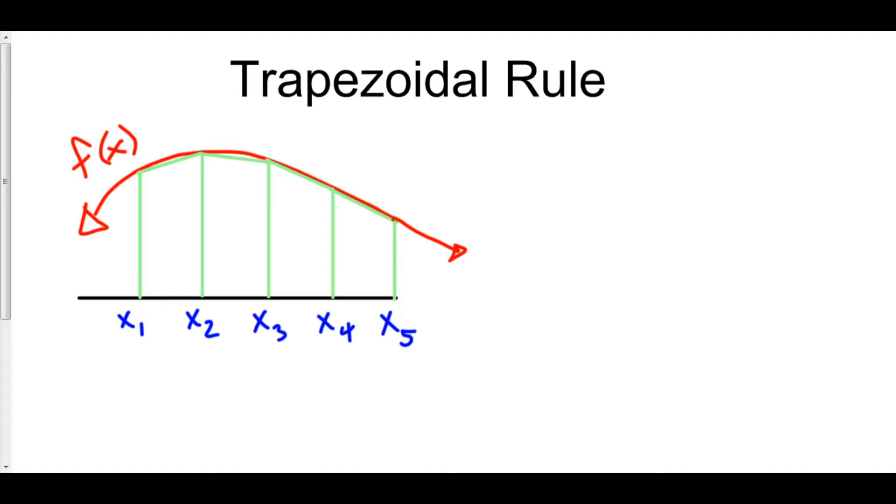Trapezoidal rule is a lot like a Riemann sum in that we are using a geometric shape to approximate the area beneath the curve. What's different though is that you get a much closer approximation than with a rectangle because a trapezoid cuts off part of that empty space, so you get much better accuracy.